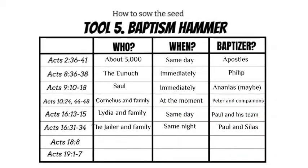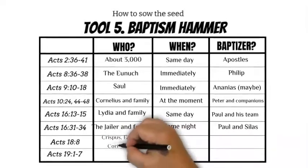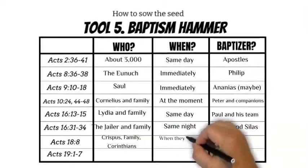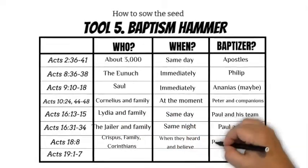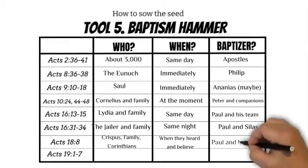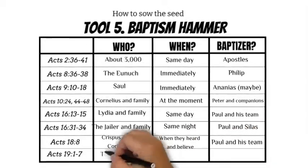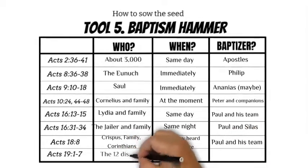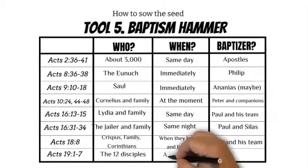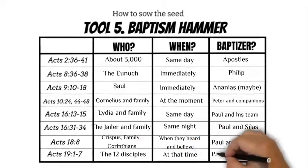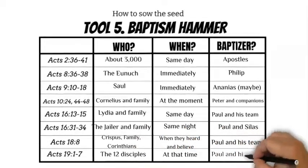Acts 18:8: who was baptized — Crispus, his house, and many of the Corinthians; when — when they heard and believed; who baptized — Paul and his team. Acts 19:1–7: who was baptized — the 12 disciples; when — at that time; who baptized — Paul and his team.